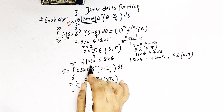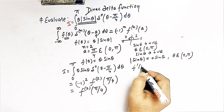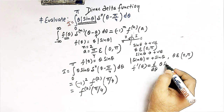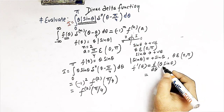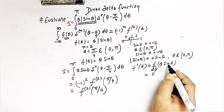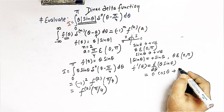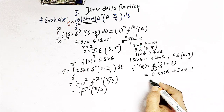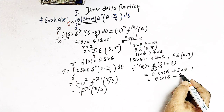Now let us differentiate f(θ) = θ sin θ. Using the product rule, f'(θ) = θ · cos θ + sin θ · 1, which gives f'(θ) = θ cos θ + sin θ.